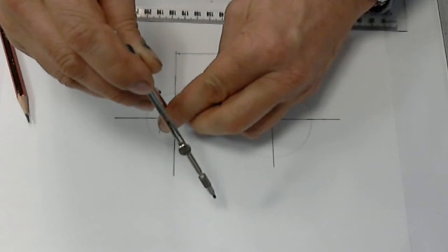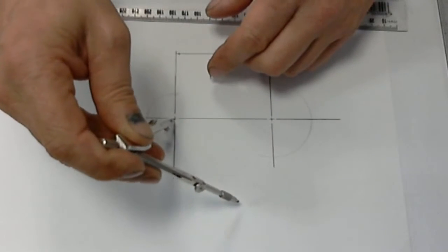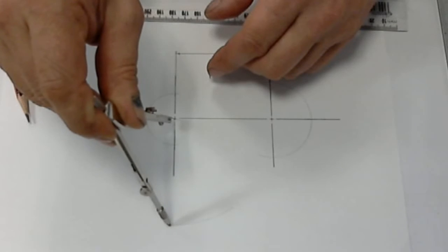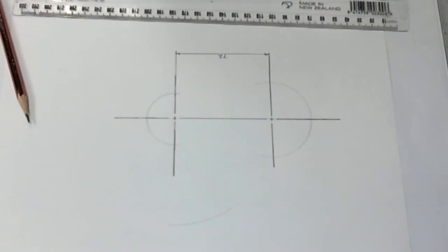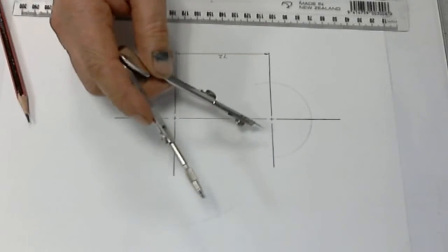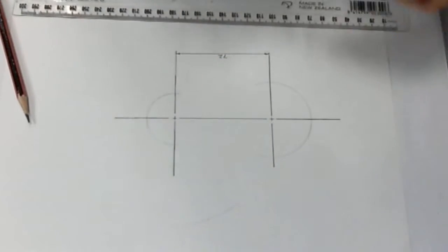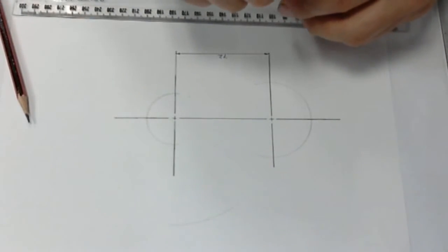So putting the compass on the center of that arc, swing an arc out there at 80 millimeters. This one is 30 so we've got 30 plus 60 so that makes a 90 millimeter radius.